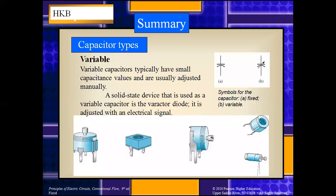The next type is the variable capacitor, whose value can be varied manually. Variable capacitors typically have small capacitance values and are usually adjusted manually. A solid-state device used as a variable capacitor is the varactor diode, which is adjusted with an electrical signal. By varying the trim position, we can change the value. The symbol with an arrowhead indicates the variable type of capacitor.